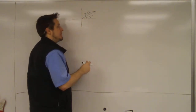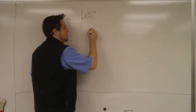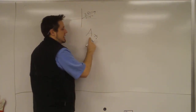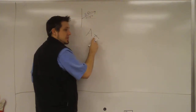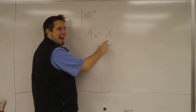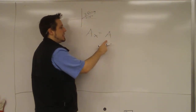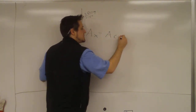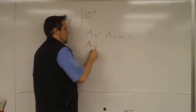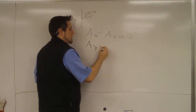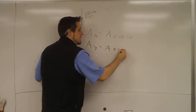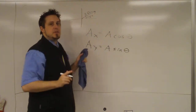The automatic method uses a general form: the x-component of any vector equals the entire length of the vector times the cosine of theta. The y-component equals the entire length of the vector times the sine of theta, where theta is very specific.